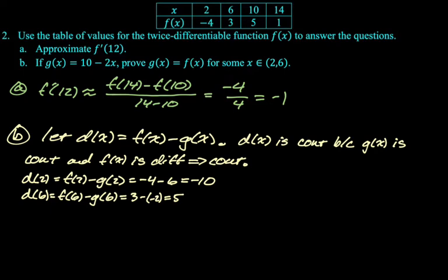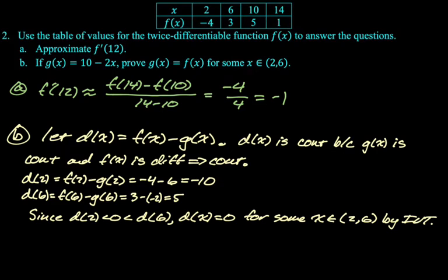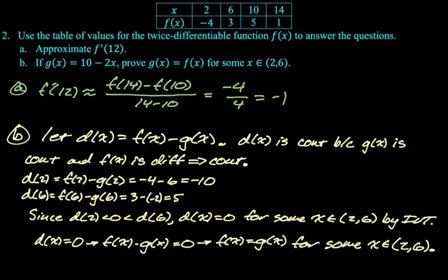Now we can say by the intermediate value theorem that d of x is equal to 0 for sure. So I'm going to say, since d of 2 is less than 0 is less than d of 6, d of x equals 0 for some x between 2 and 6 by IVT. So we're not done with the problem though, because d of x was not a part of the question, we created it. So we have to go back and get why is f of x equal to g of x? Well, if d of x is equal to 0, that means f of x minus g of x, which is d of x is equal to 0. If f of x minus g of x equals 0, that means that f of x equals g of x for some x between 2 and 6. And we did it. That's how you can tackle that problem every time. If you need to show two functions are equal, consider making a third function, show that that function equals 0, and then go from there. I recommend that technique. There's other things you can do, but it requires way more argumentation, and nobody wants to do that.